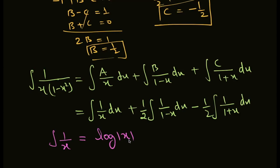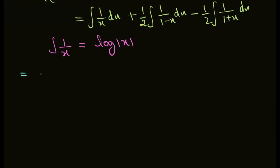The integration of 1 upon x is log mod x. Applying the same formula, this equals log mod x plus 1 upon 2. The integration of 1 minus x is log(1 minus x) divided by its derivative, which gives minus 1, and minus 1 by 2 log(1 plus x) plus C.